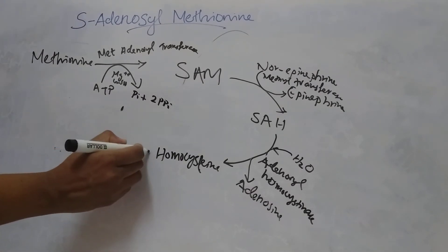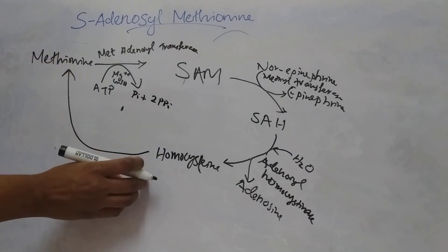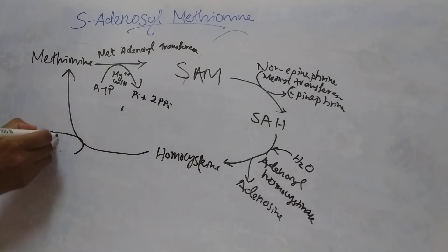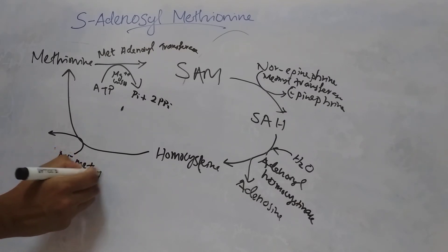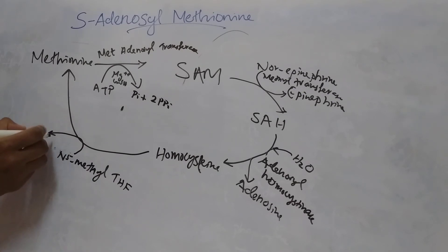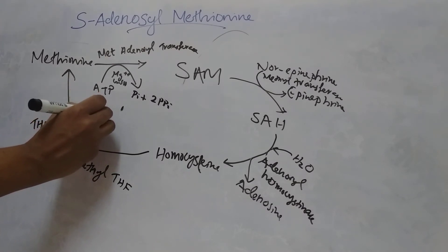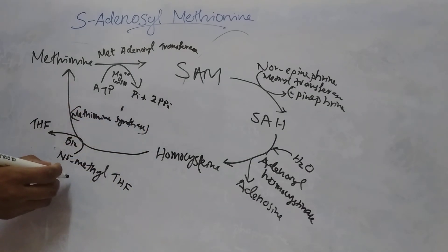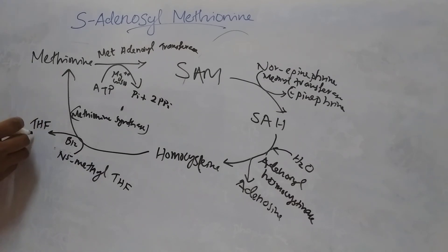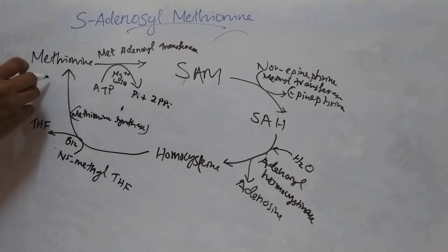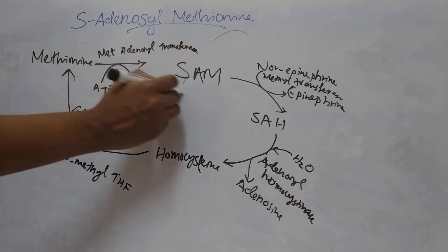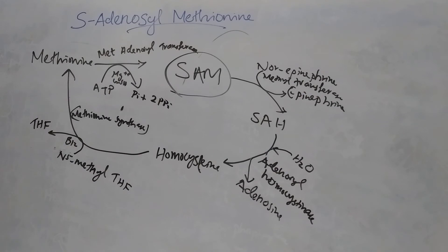This homocysteine is then remethylated to form methionine again. The methyl group donor is N5-methyl-THF, which is converted to tetrahydrofolate (THF). This reaction takes place in the presence of vitamin B12, and the enzyme is methionine synthase. This methionine again, in the presence of ATP, forms the active form S-adenosyl methionine, completing the S-adenosyl methionine cycle, also known as the methionine cycle or active methyl cycle.